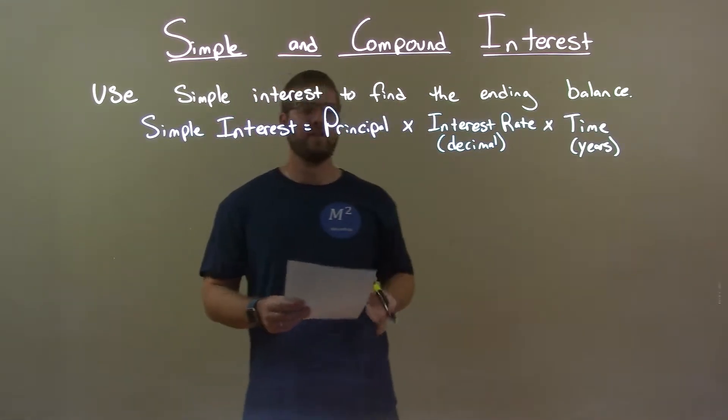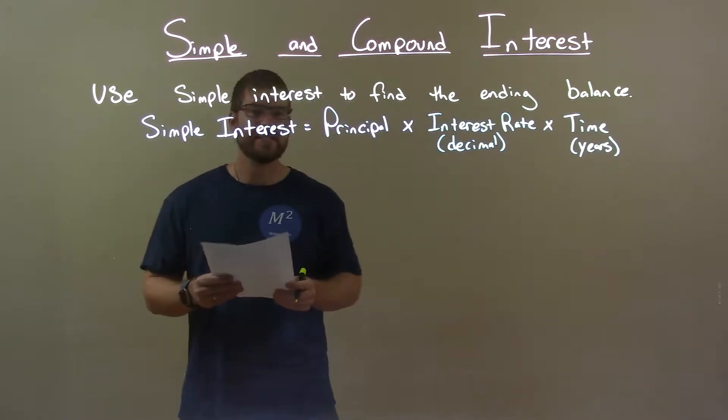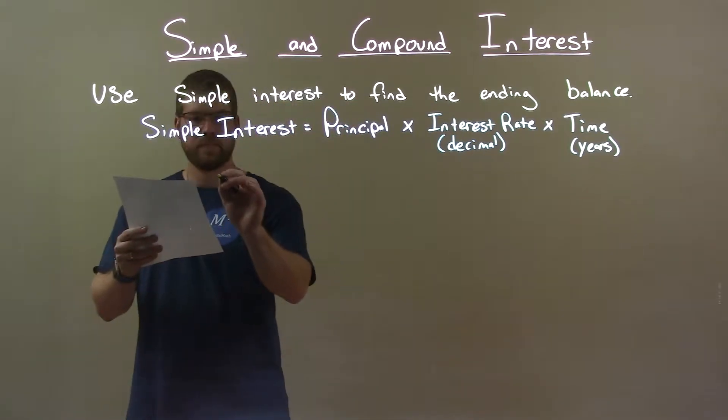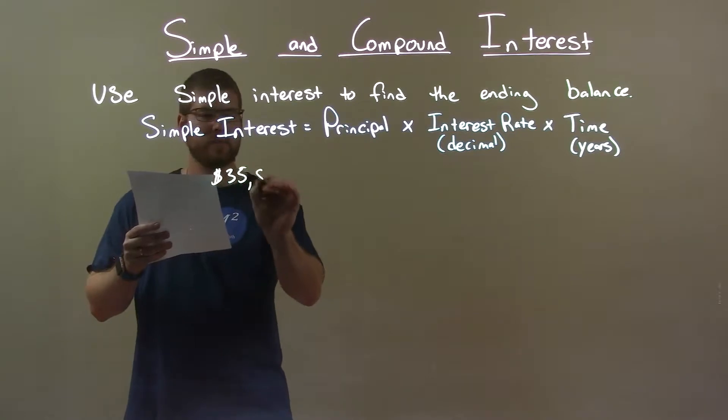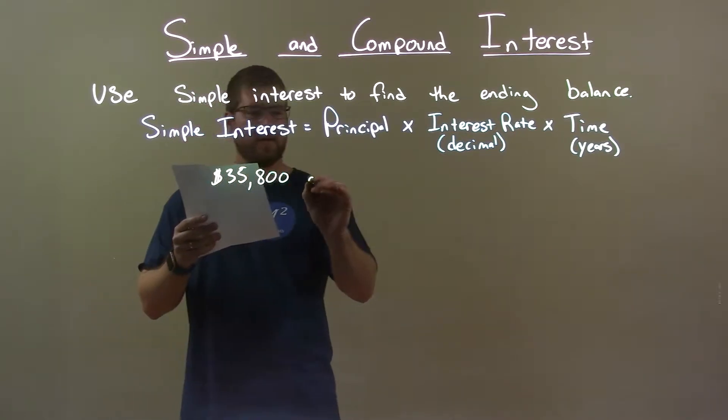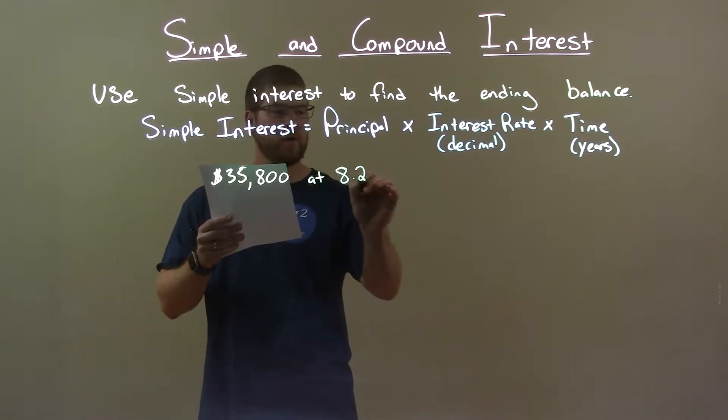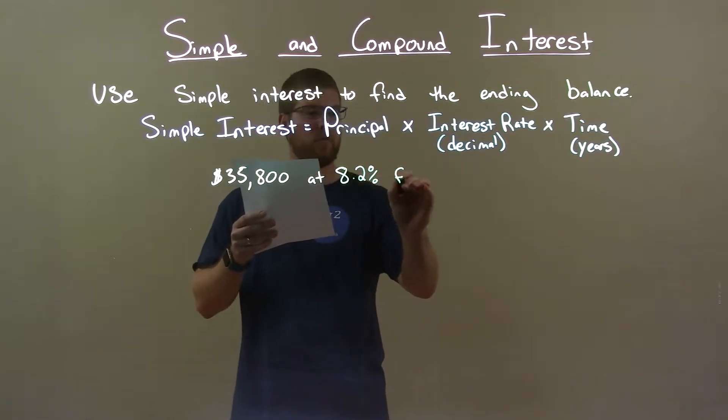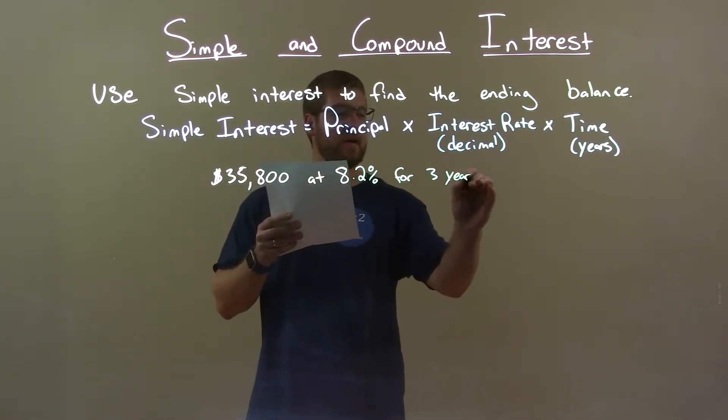Use simple interest to find the ending balance. If I was given this problem: $35,800 at 8.2% for 3 years.